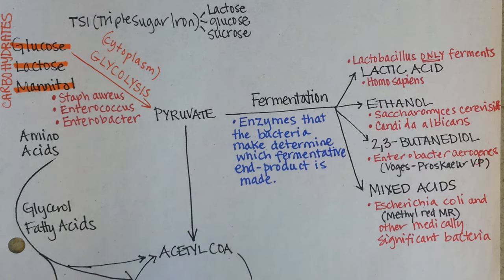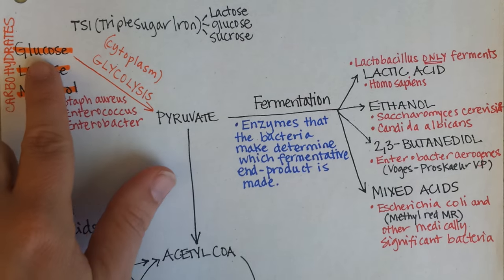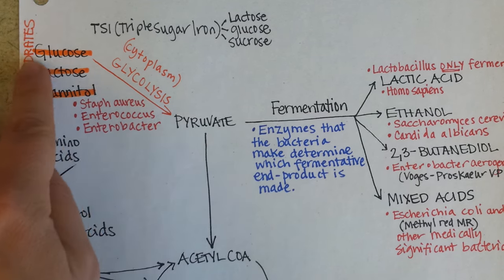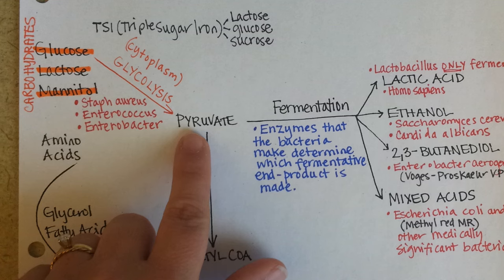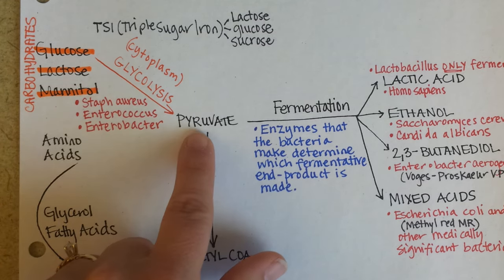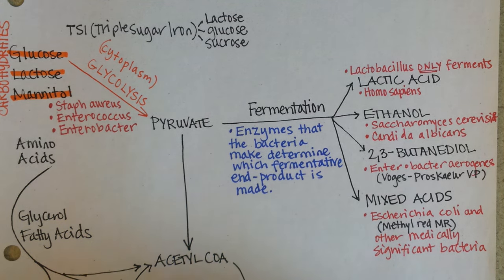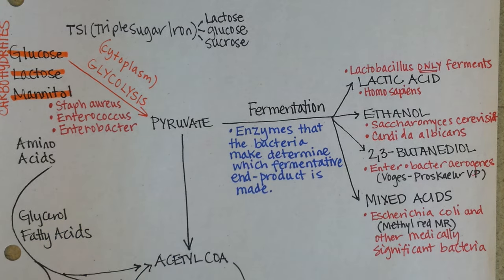To recap: glycolysis occurs in the cytoplasm of all living things and is the process of converting glucose into pyruvate. Bacteria are able to take a few other substrates and get them converted to pyruvate as well. Then pyruvate can be fermented into a variety of products — most bacteria are able to ferment. A couple are not, such as Pseudomonas aeruginosa, although clinically it's occasionally found to ferment as well.